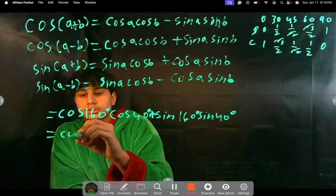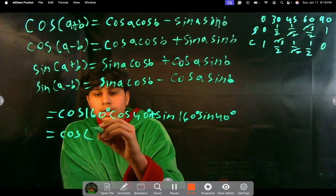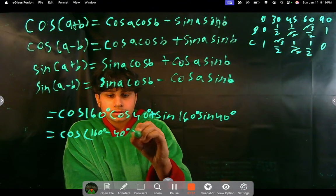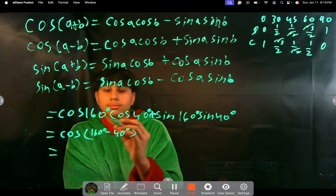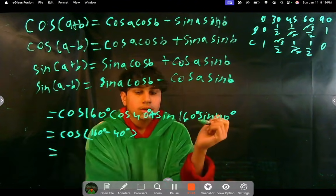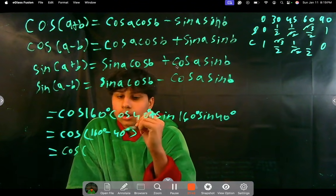So cosine of, well what did we say was A? What did we say was B? We said A was 160 and B was 40 degrees. So it's just cosine of 160 minus 40, which is then going to be cosine of 120.